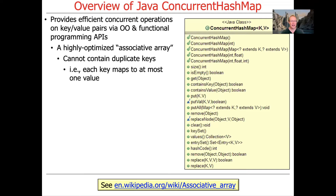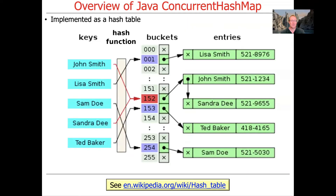If you have one key and you try to reassign it, you'll just update the value — the key will never change. Another way of saying this is that each key maps to at most one value, which is often known as an associative array.